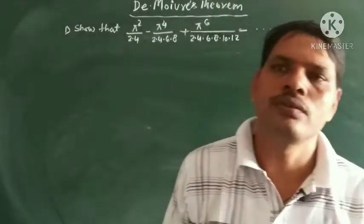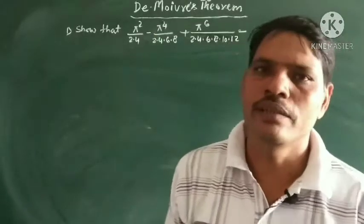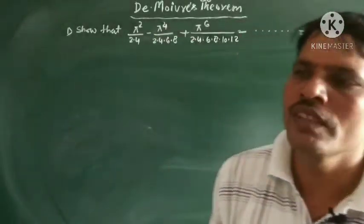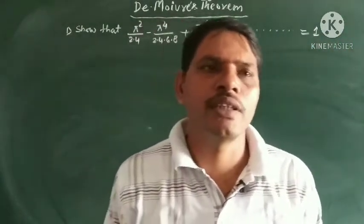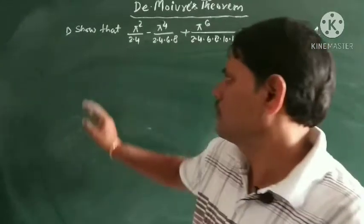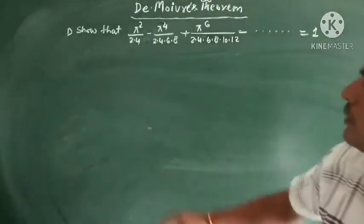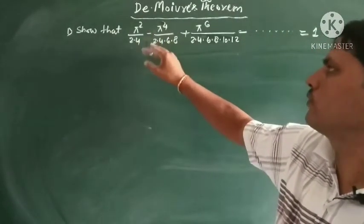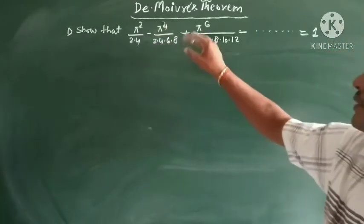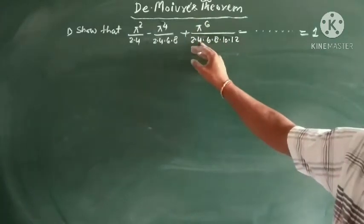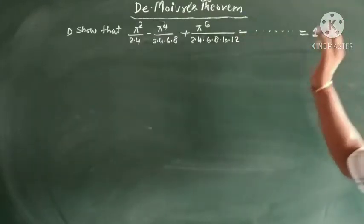Hello everybody. Today we discuss the book Algebra and Trigonometry, the part of trigonometry — De Moivre's theorem. The problem is: pi squared upon 2 into 4, minus pi to the power 4 upon 2 into 4 into 6 into 8, plus pi to the power 6 upon 2 into 4 into 6 into 8 into 10 into 12, and so on, is equal to 1.